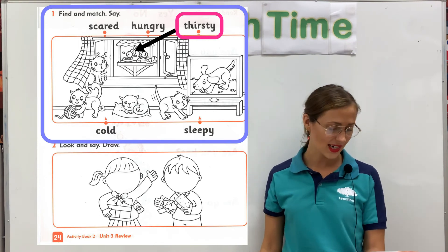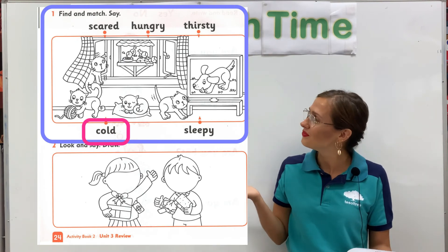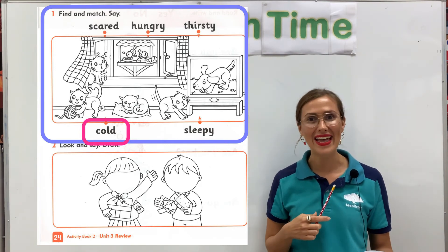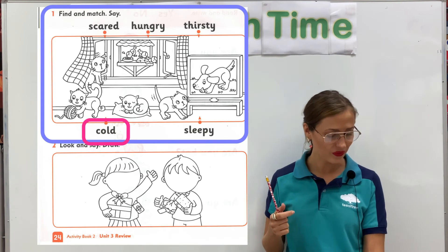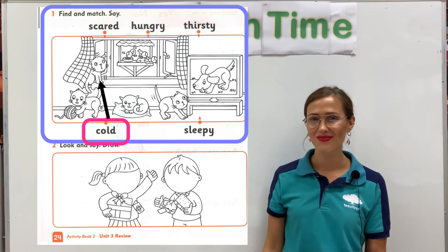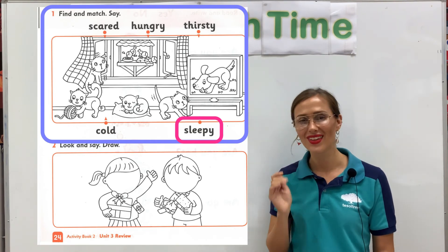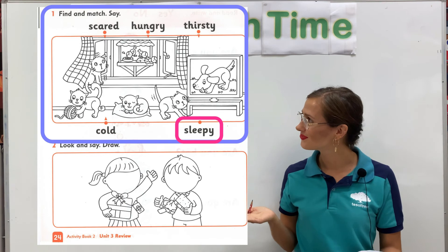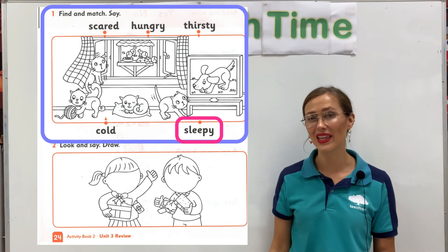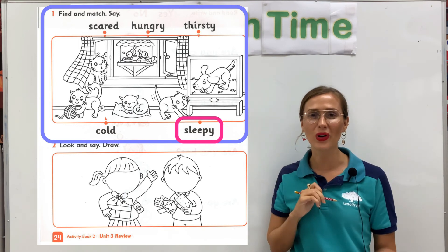Our next feeling is cold. Who is cold? Yes, it's the cat by the window — he is cold. Let's make a line from cold to the cat. And our last feeling: Sleepy. Who is sleepy? Yes, it's the cat on the pillow — he is sleepy. Let's make a line from the cat to the word sleepy.